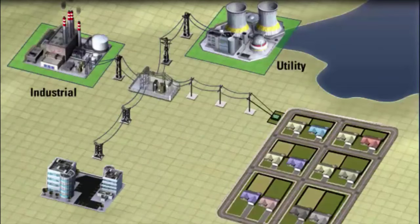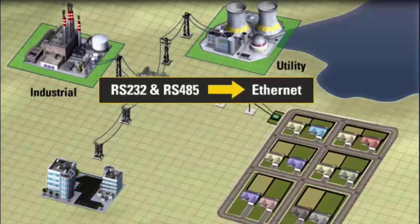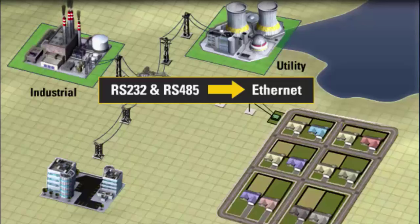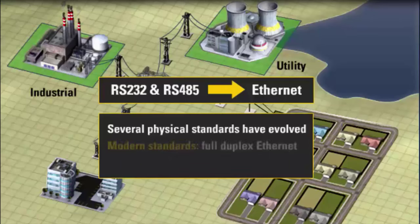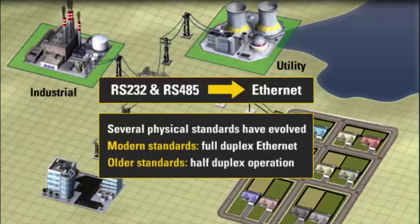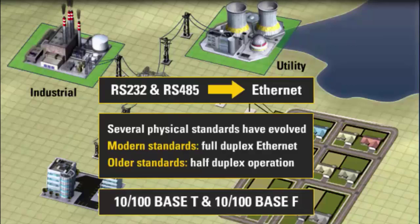Many advancements in Ethernet LAN hardware have created high quality, robust, and multi-vendor compatible hardware that is readily available almost anywhere in the world at relatively low cost. Larger industrial and utility power applications have already migrated or are migrating from older proprietary RS-232 and RS-485 based LAN technologies to Ethernet. Over the years, several physical standards have evolved. The modern standards support full-duplex Ethernet, while older standards support half-duplex. The two most popular physical layer standards are 10/100 Base-T and 10/100 Base-F, both supporting full-duplex operation.